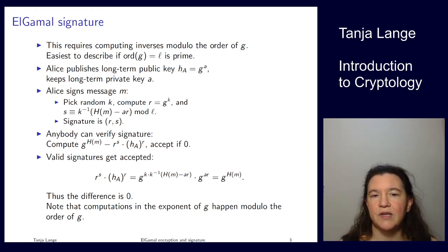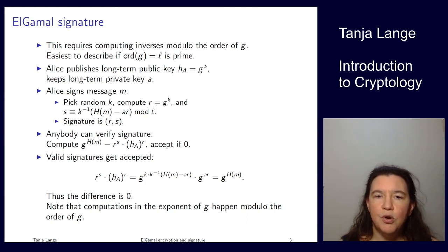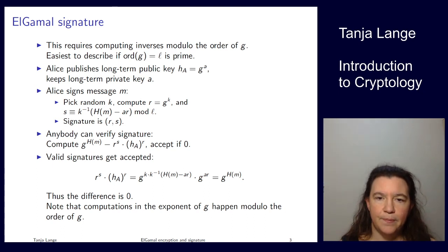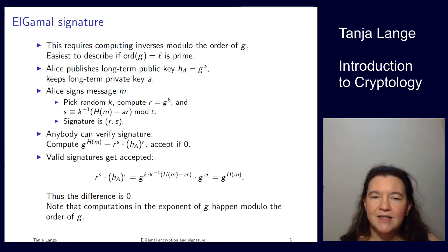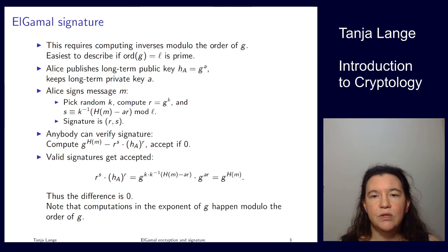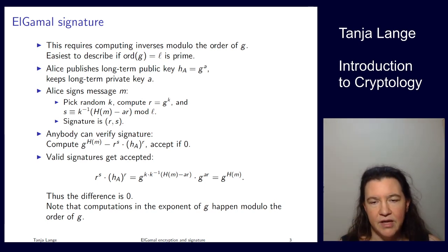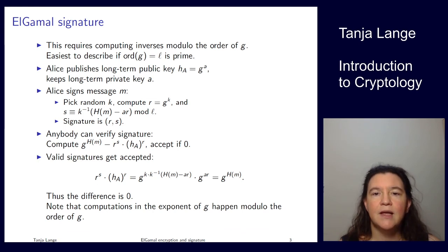Those are the two ElGamal systems. ElGamal encryption is, in practice, less useful than semi-static Diffie-Hellman key exchange. ElGamal signatures are the basis of several modern systems, though slightly better alternatives based on Schnorr signatures exist — they avoid the inversion mod L and have better properties against collision attacks on hash functions. Still, this gives a solid example of a discrete logarithm-based encryption system and a discrete logarithm-based signature system.